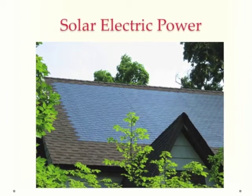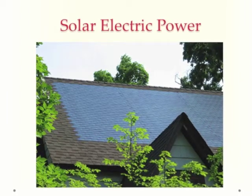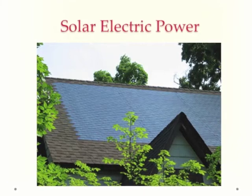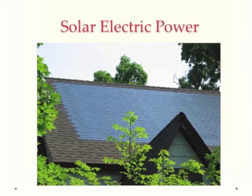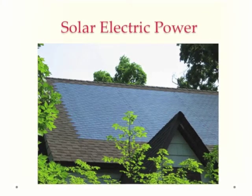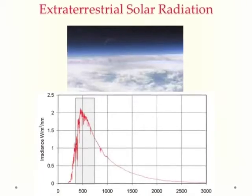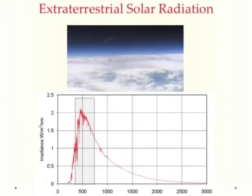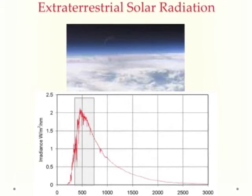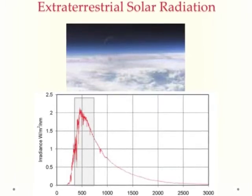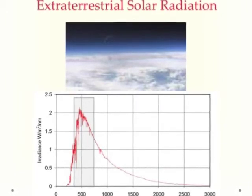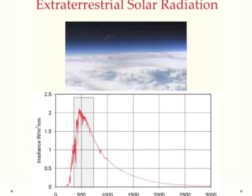In this presentation, we'll look at another way to use renewable energy to make electricity, and this is through the use of solar energy. Solar energy is a form of electromagnetic energy. The solar energy that comes through the atmosphere is ultraviolet, visible, and infrared.